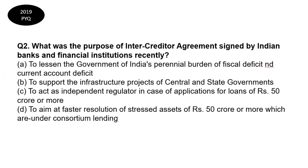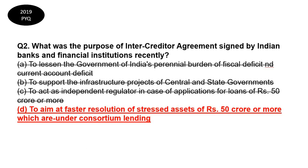Question 2: What was the purpose of the Inter-Creditor Agreement signed by Indian banks and financial institutions recently? Options include: lessening fiscal and current account deficit burden; supporting infrastructure projects; acting as independent regulator; or aiming at faster resolution of stressed assets of rupees 50 crore or more under consortium lending. The correct answer is D — faster resolution of stressed assets of rupees 50 crore or more under consortium lending.